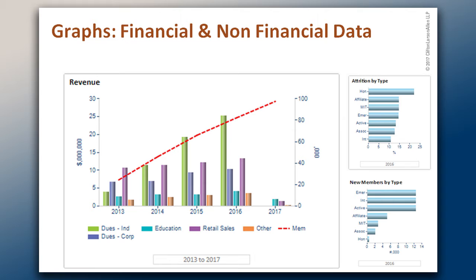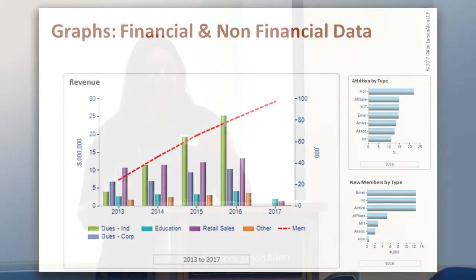We saw something really interesting: our members are going up — fantastic, everyone wants their members to go up — and as a result our dues revenue was going up too. Overall revenues going up. But we also saw that all of our other revenues were remaining stagnant. So maybe we aren't doing such a good job of engaging those members and showing them all of our other services, making sure they're getting the most out of their membership.